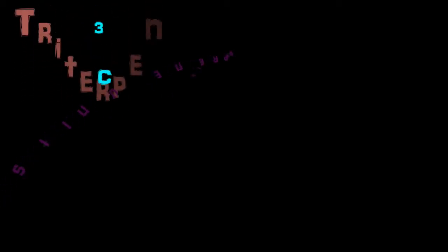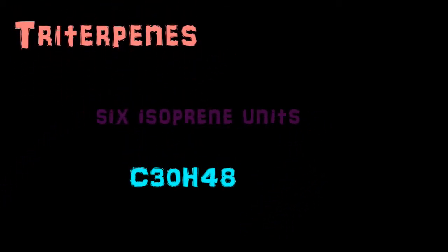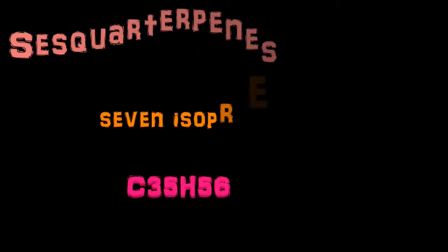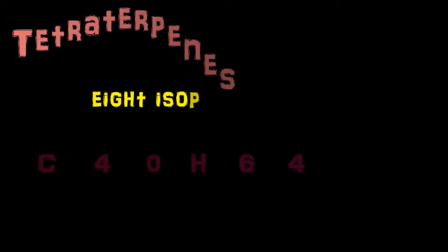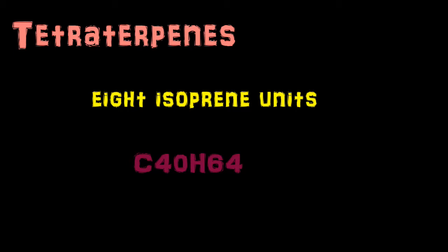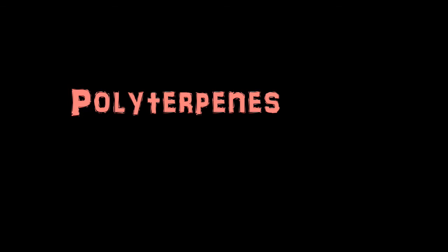Then triterpenes, consisting of six isoprene units with the molecular formula C30H48. Sesquarterpenes are composed of seven isoprene units with the molecular formula C35H56. Tetraterpenes contain eight isoprene units with the molecular formula C40H64. Polyterpenes consist of long chains of many isoprene units. And the last type is norisoprenoids.